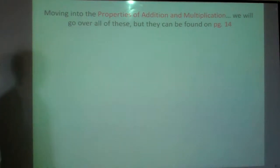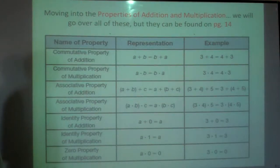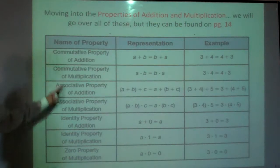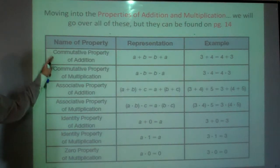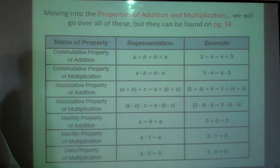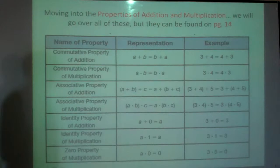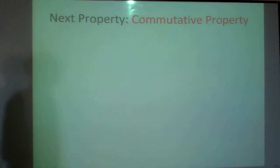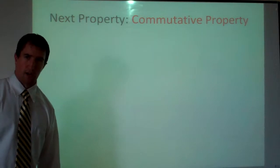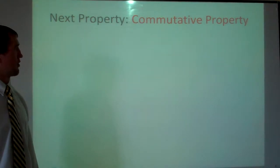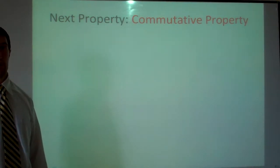This table can be found on page 14 and it lists all the properties we need to know, so it's a good tool. We're going to go through these. The first property is the commutative property.